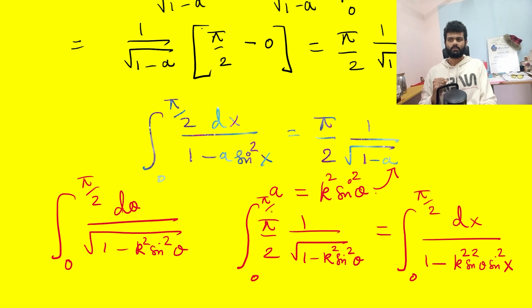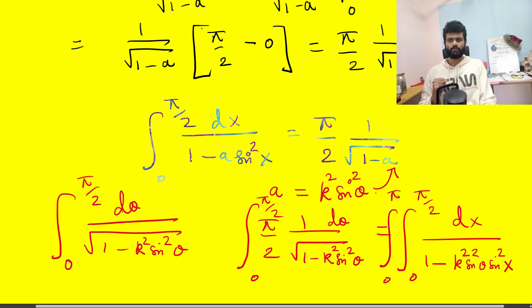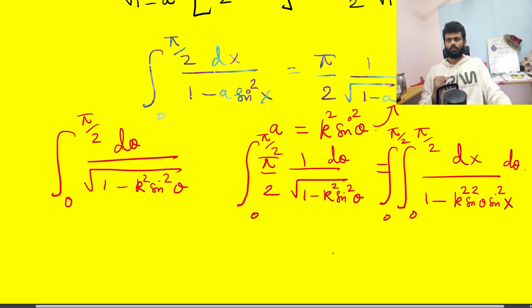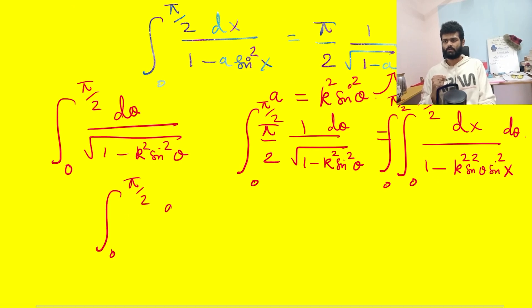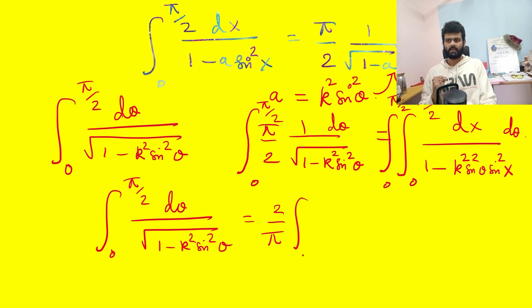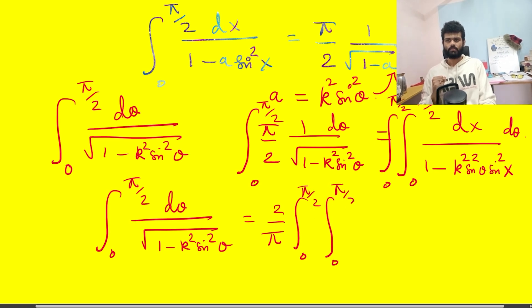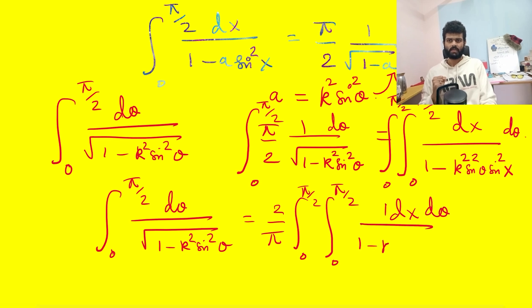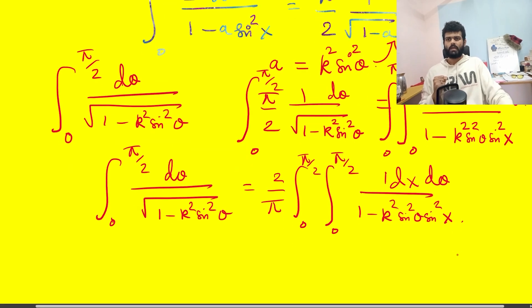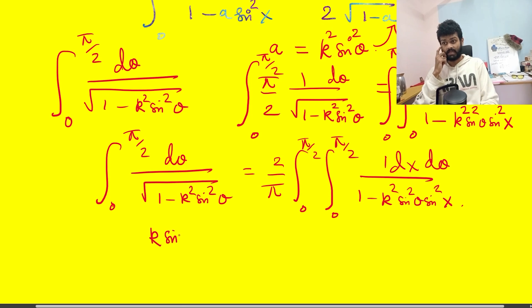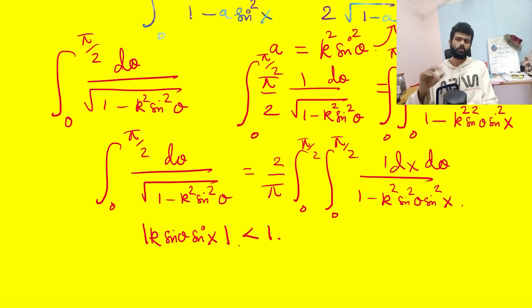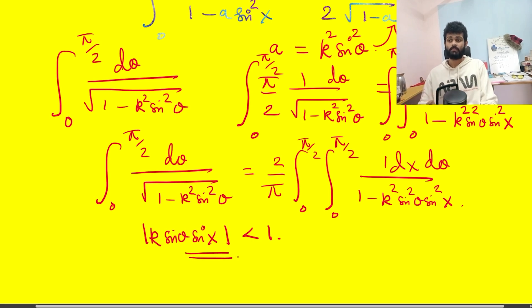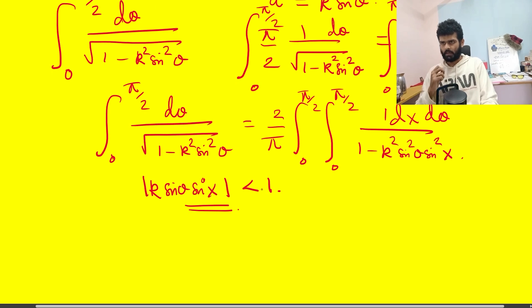Integrating both sides with respect to dθ from 0 to π/2, and bringing π/2 to the right side, the target integral equals (2/π) times the double integral from 0 to π/2 of dx dθ over (1 − k² sin²θ · sin²x). Note that the absolute value of k sinθ sinx is less than 1 (except possibly at finitely many points), so the convergence condition is satisfied.